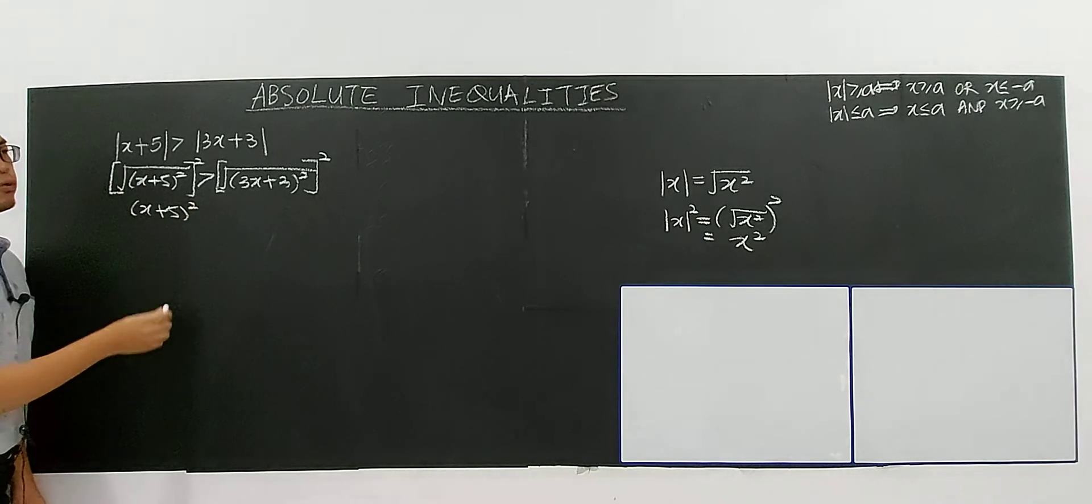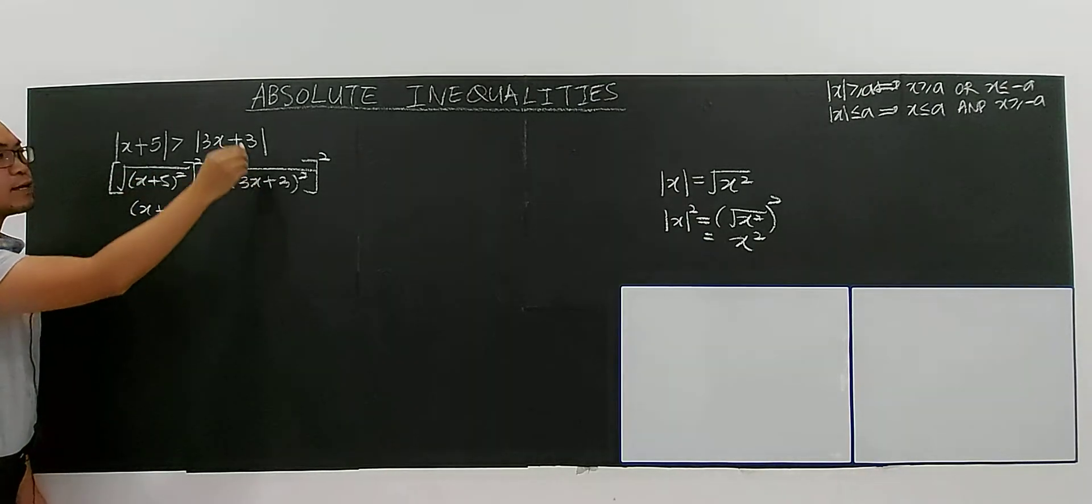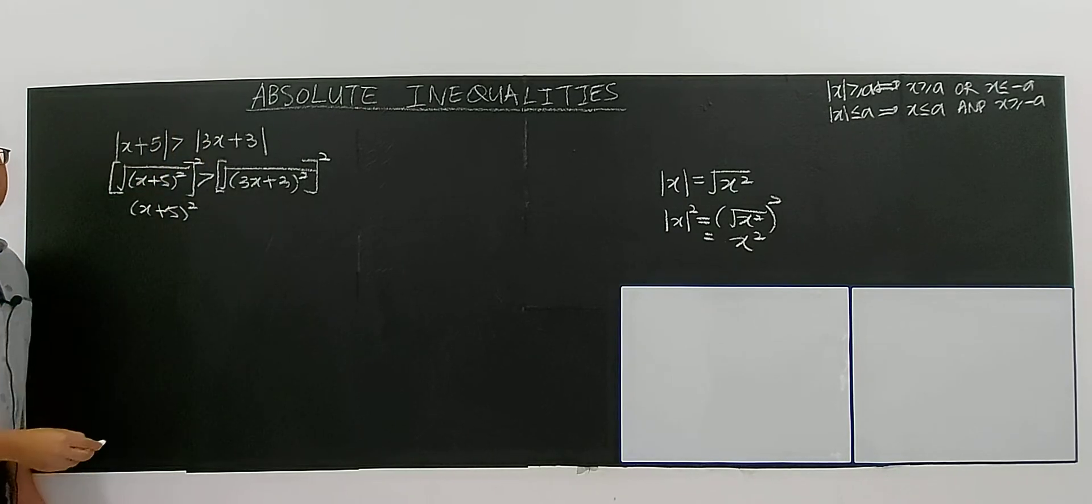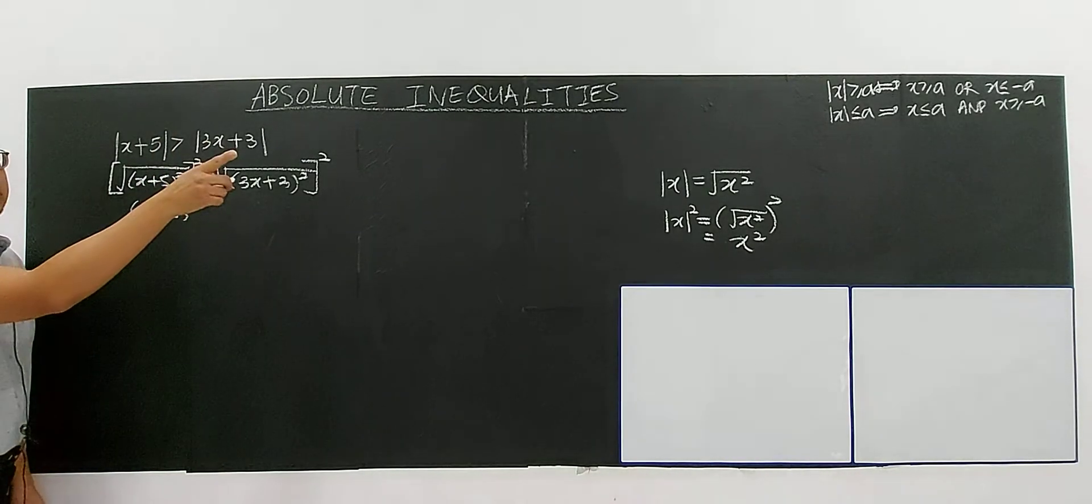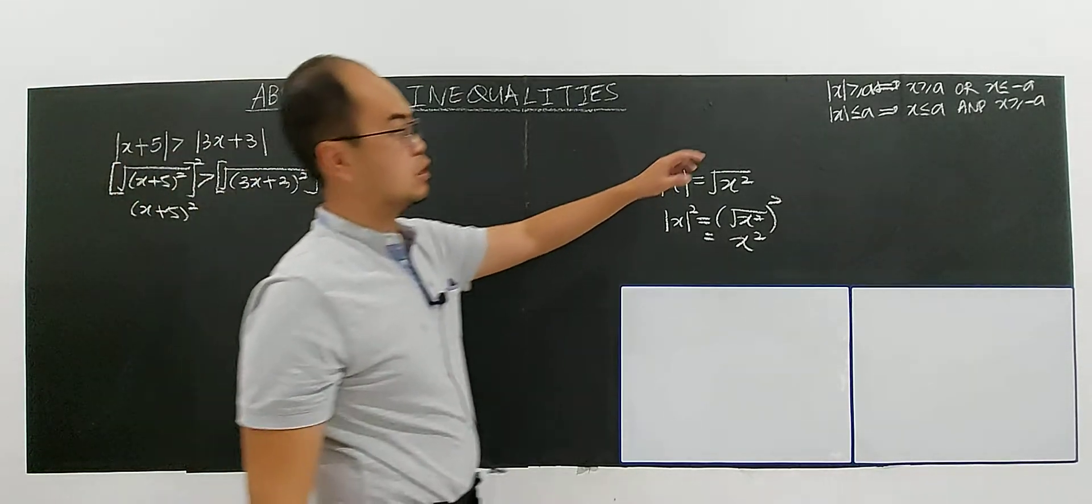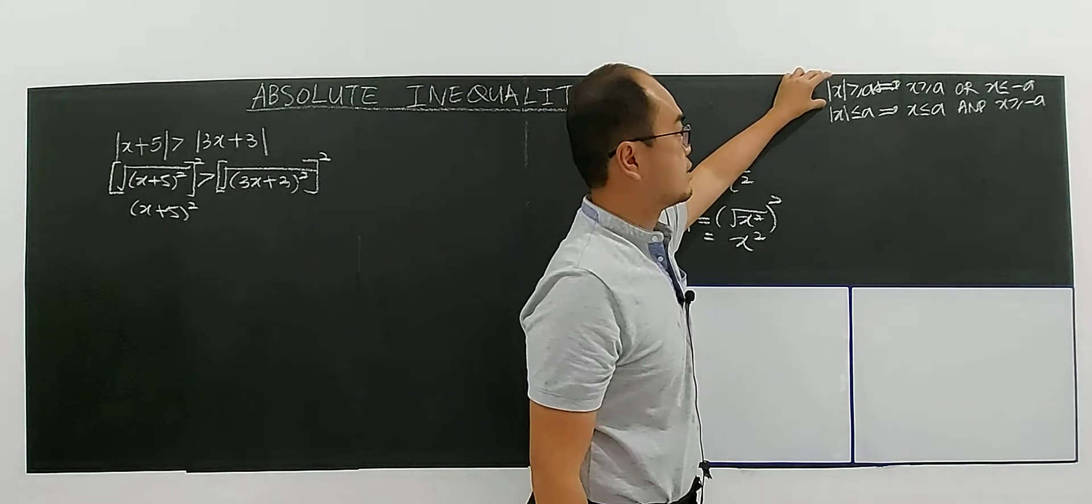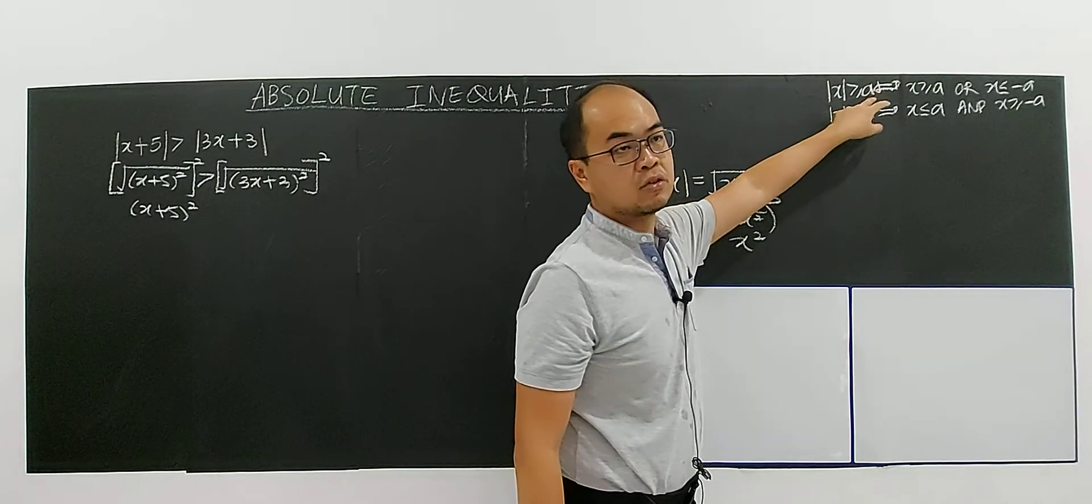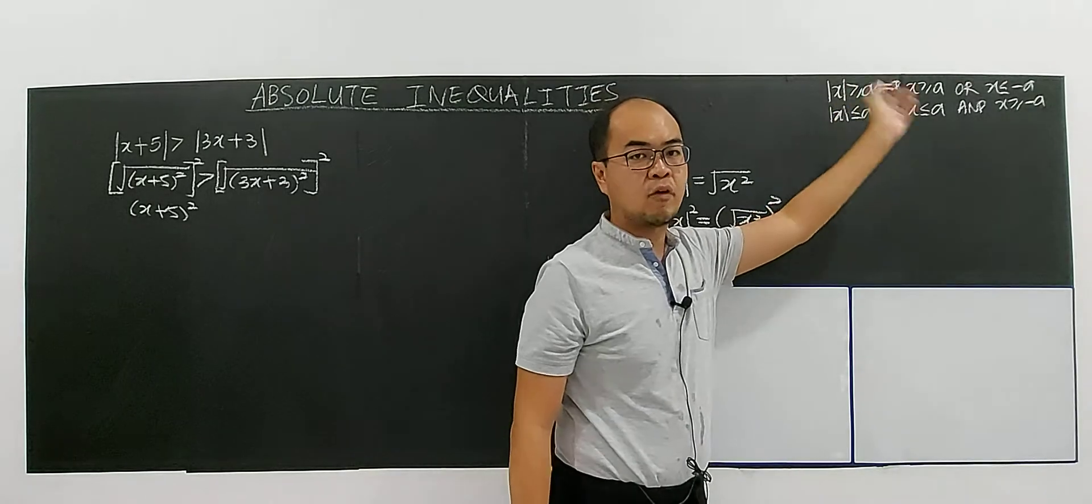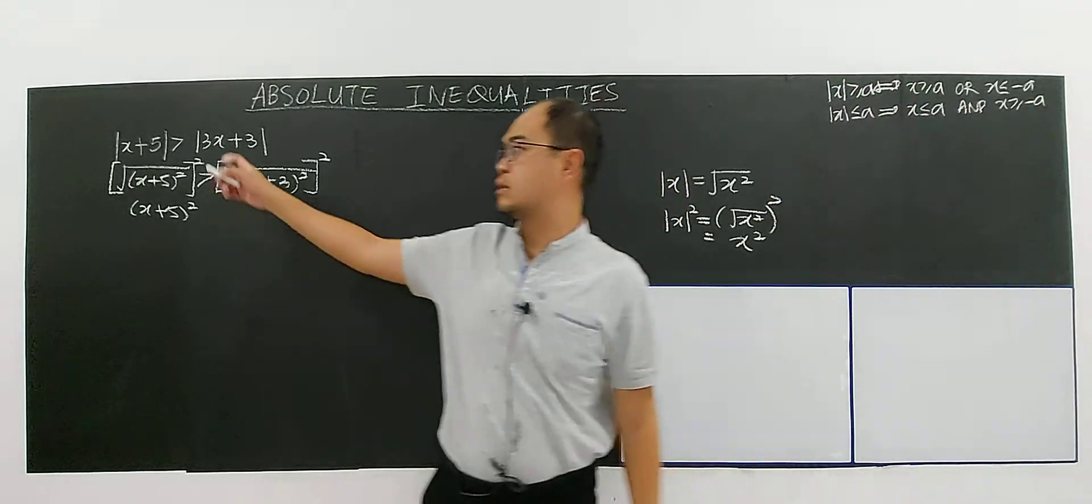I have to remind you again, we only apply squaring both sides if there are modulus on both sides. Because if you see the base definition, there are only modulus of one side. The other got no modulus. So this base definition, this formula, we can't apply to this case.